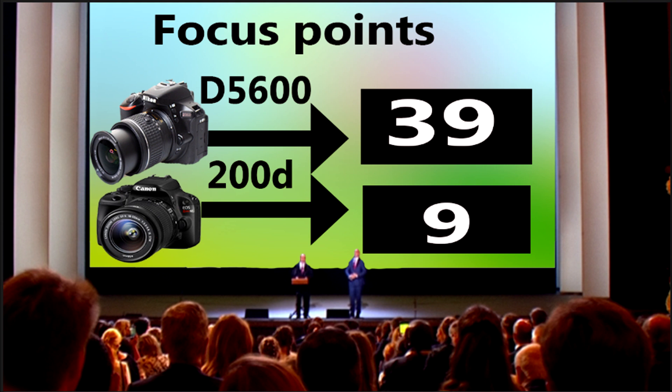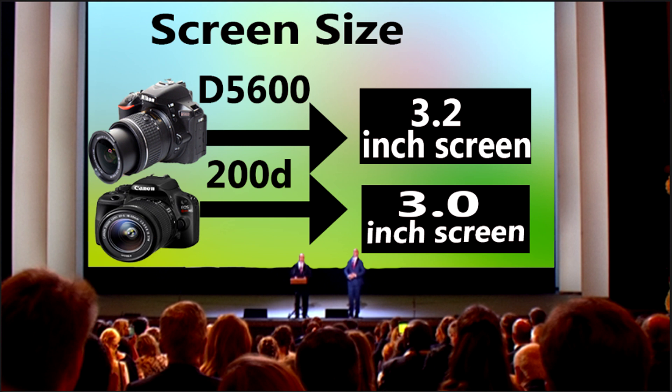The second advantage of the Nikon D5600 over the Canon 200D is screen size. Canon offers a 3-inch screen, while Nikon gives you a larger 3.2-inch screen.